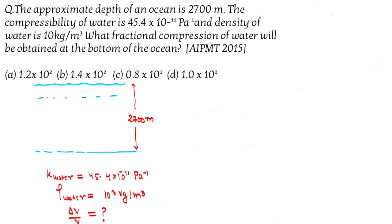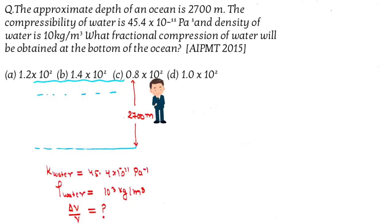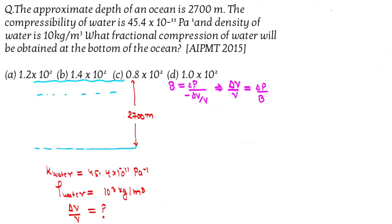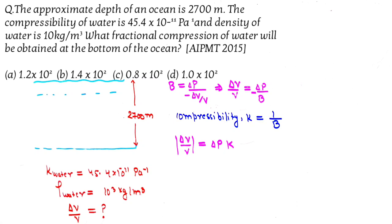We have to find delta V by V. The bulk modulus formula is B equals delta P divided by delta V by V. Rearranging, delta V by V equals delta P by B. Since compressibility K is the reciprocal of bulk modulus, that is K equals 1 by B, you can write delta V by V equals delta P into K.